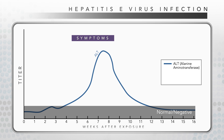Symptoms, noted by the purple bar, occur when liver enzymes are elevated. Virus excretion in stool, illustrated by the orange bar, is variable, but usually lasts from about one week before symptoms appear until about one week after they have surfaced. However, this time frame can be longer in some people.